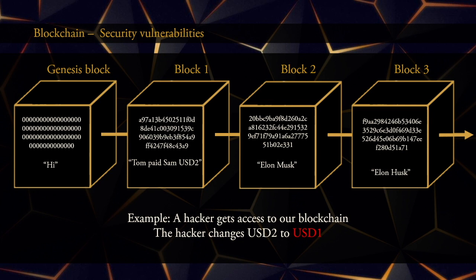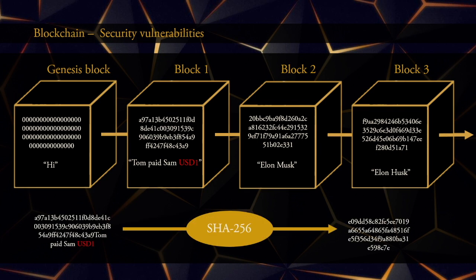In this example, a hacker gets access to our blockchain and changes USD2 to USD1. Is there a way for us to notice that something is wrong? Look at block number one and find the hash of this block — that is E09DD5 and so on. The problem is that this does not match the fingerprint saved in block number two. The number 20BBC9 and so on inside block two is the hash of block number one, but our most recent computation gives something else, namely E09DD5. The only explanation is that someone has tampered with block number one.